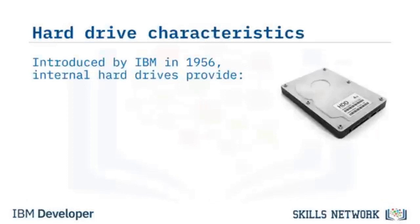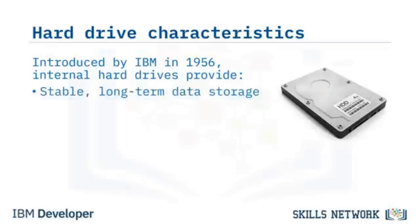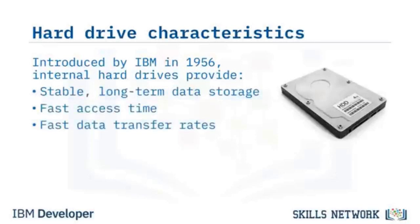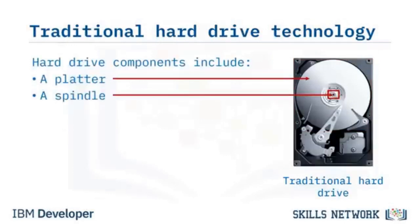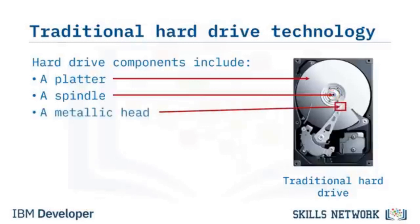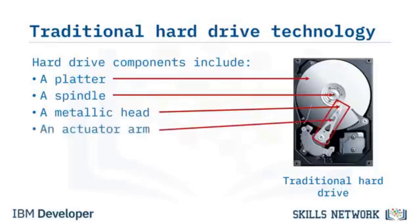Introduced by IBM in 1956, internal hard drives provide non-volatile, long-term data storage, fast access time, and fast data transfer rates. Traditional hard drives contain a platter with a magnetic surface where data is stored. The platter rotates on a spindle which controls the speed of the platter's spin. The metallic head floats just above the platter where it can read and write magnetic data. The head is at the end of an actuator arm that positions the head to read or write data. Together, the spindle, actuator arm, and head are controlled to read and write a specific task on the disk.